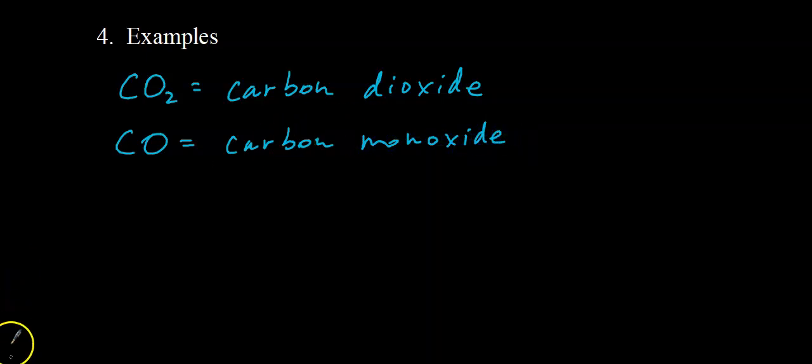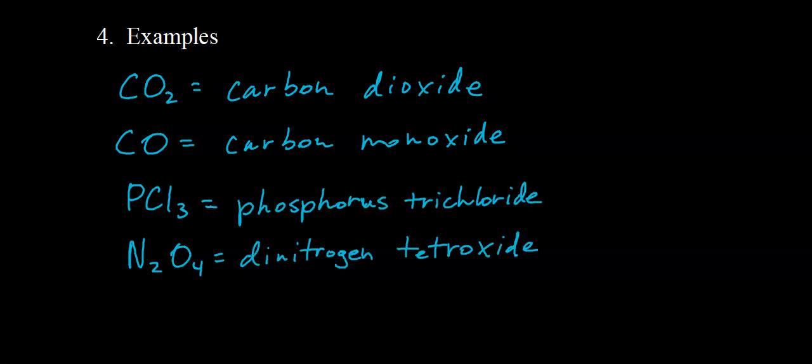Let me give you a couple more to try. Go ahead and pause the video and name those compounds. Hopefully you got these. We have one phosphorus and three chlorine, so this would be phosphorus trichloride. For the next one, we have two of the first element, so we have to use a prefix for that one. Our previous examples only had one of the first element, so we never used mono there. This time we use "di" — di-nitrogen — and there are four oxygens, so the prefix is "tetra." We drop the A from tetra, giving us dinitrogen tetroxide.